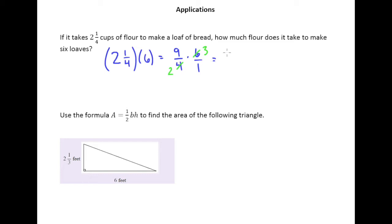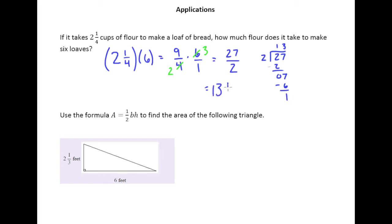And so, nine times three is 27. Two times one is two. This is the correct improper fraction, but it's not a very good way to answer the question. This is a real-world problem, so it should be answered as a mixed number. So, we're going to go ahead and convert it back into a mixed number, and we end up with 13 and a half cups of flour.